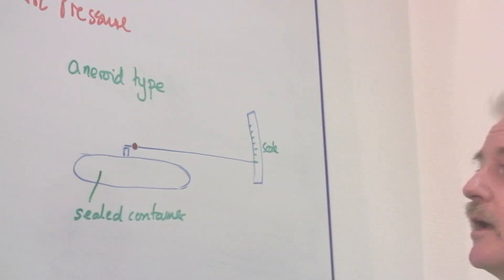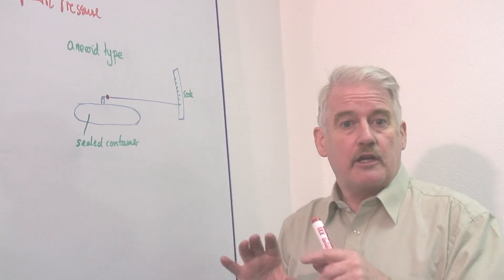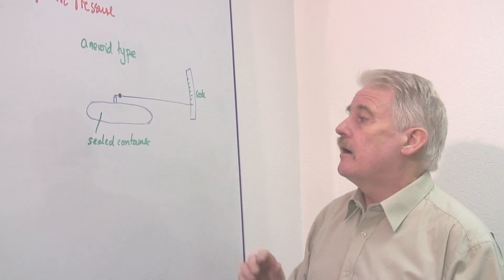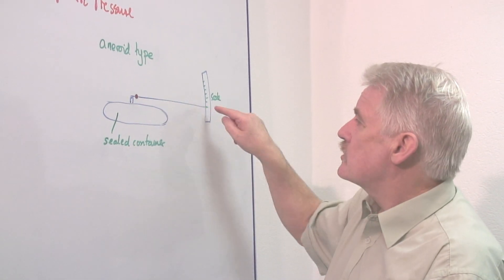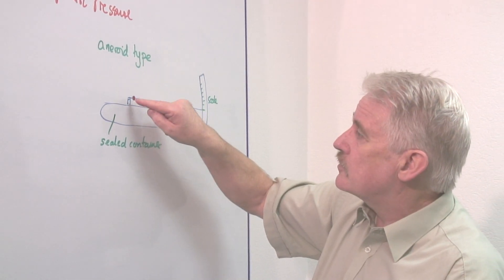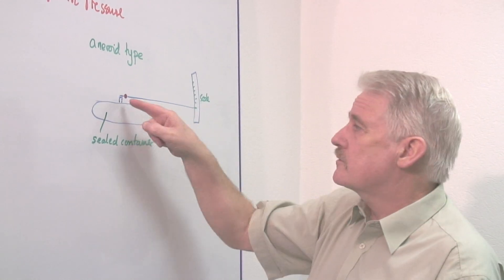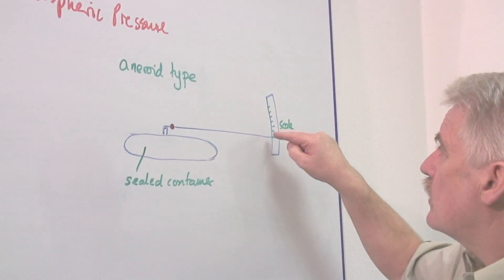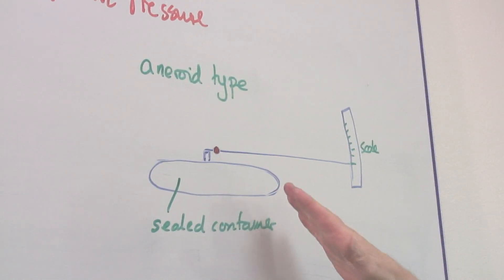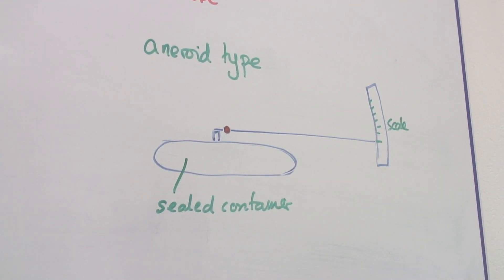This is the type you could make at home. All you need is something which will be crushed by the atmospheric pressure. Fix it, and fix the pointer very close to the pivot on the side of the container, maybe a plastic bottle of some kind. And that pointer will move up a scale when the pressure increases. When the pressure decreases, it'll move down the scale.